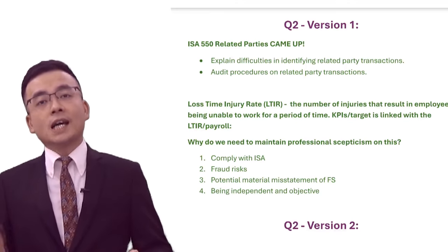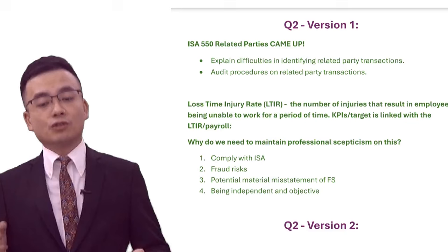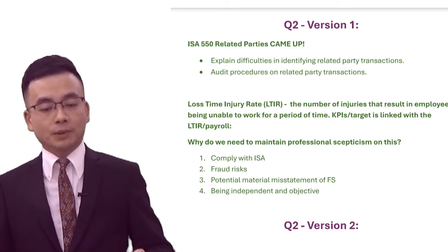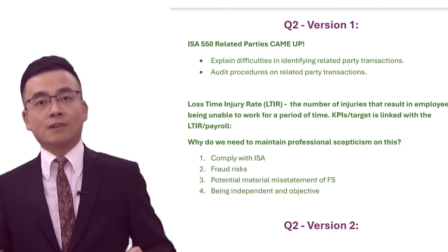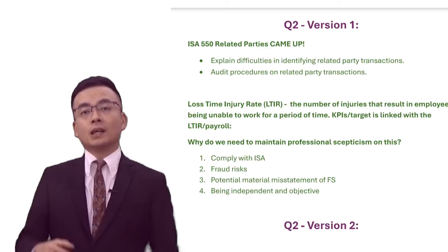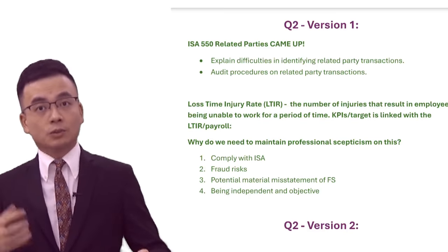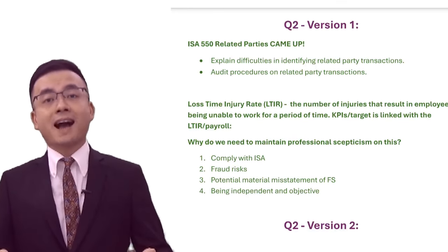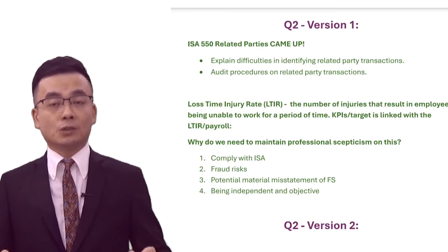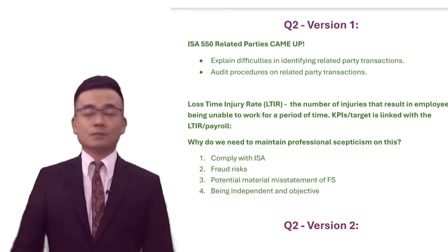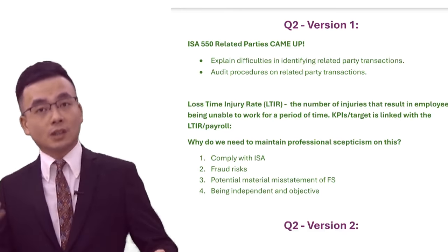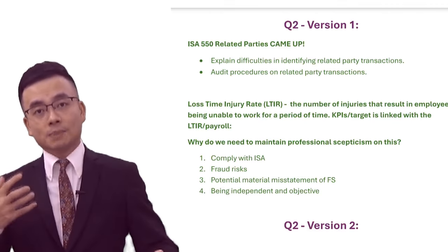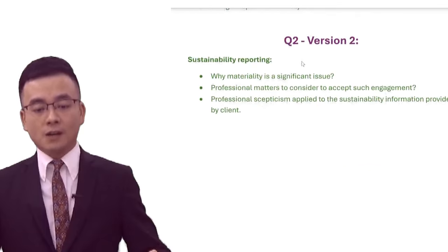The next requirement in the case scenario talks about lost time injury rates, or LTIR. This refers to the number of injuries resulting in employees being unable to work for a period of time. If KPIs are linked to this, management may easily manipulate the KPIs in order to get bonuses or subsidies from the government. The requirement asks you to demonstrate how you would maintain professional skepticism. Your answer should touch on complying with ISAs, reducing fraud risk, identifying potential misstatements in the financial statements, and being independent and objective — this will earn you very reasonable marks.